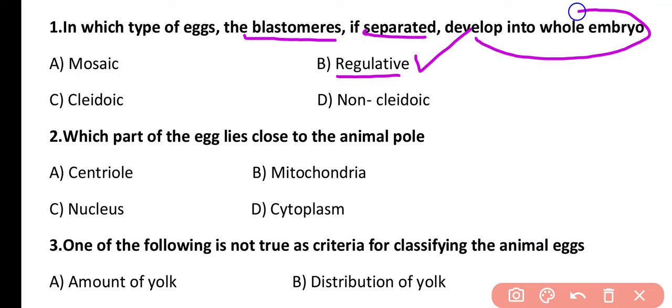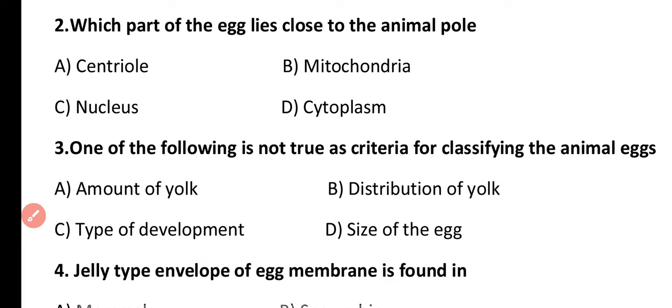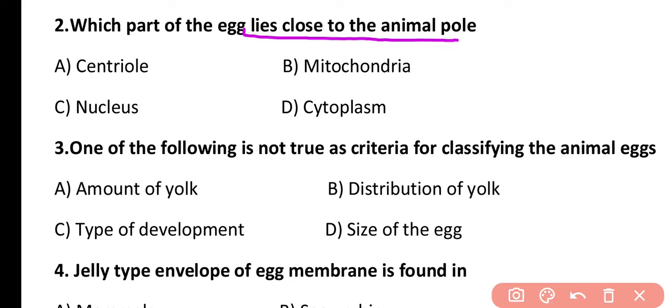Question 2. Which part of the egg lies close to the animal pole? Centriole, mitochondria, nucleus, or cytoplasm? The correct answer is option C. The nucleus is the part of the egg that lies close to the animal pole.